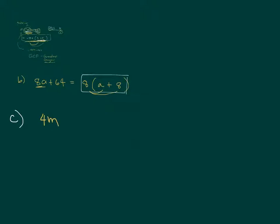Next: 4m minus 6my minus 18mz. Sometimes there can be three terms, but the procedure is the same. For the numbers, what is common among 4, 6, and 18? 2. For the letters, what letter is common in all three terms? m — it appears in all three. What about y? No, it's only in the second term. What about z? Only in the third. So we factor out 2m.